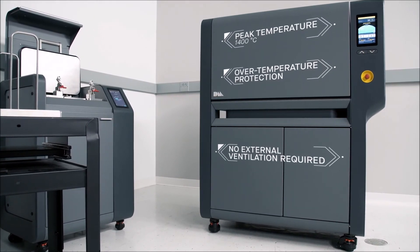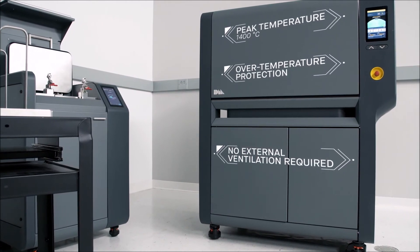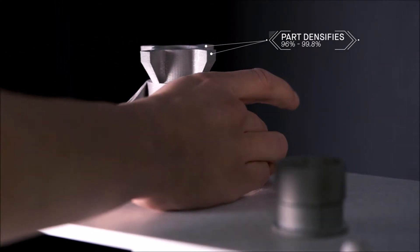Heated to temperatures near melting, remaining binder is removed and metal particles fuse together, causing the part to densify up to 96 to 99.8%.